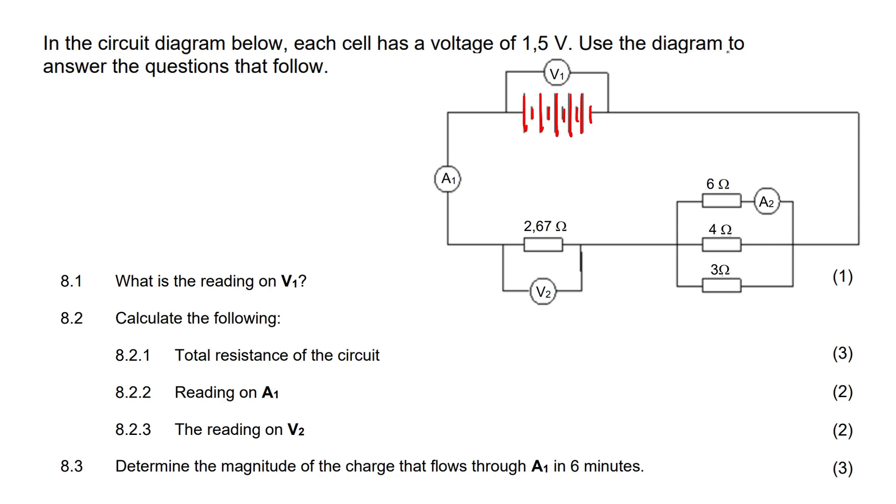So that means there's five of them. What is five multiplied by 1.5? That'll give you 7.5 volts. So this is a 7.5 volt battery. It says, what is the reading on V1? Well, there we have it, 7.5 volts.